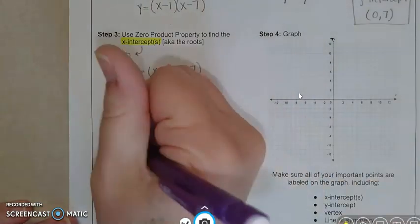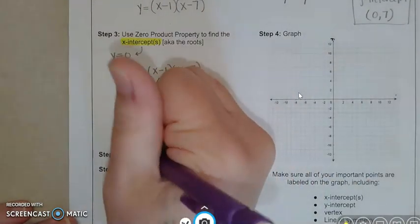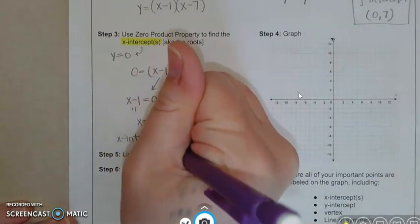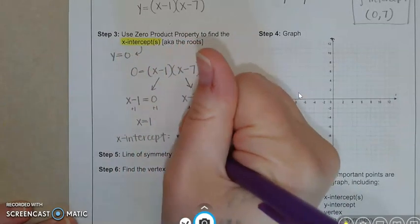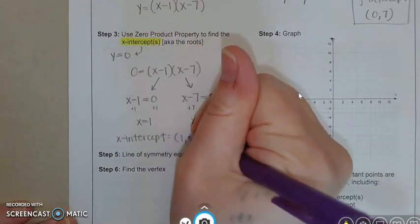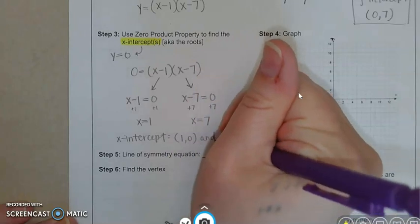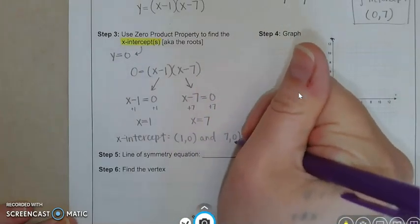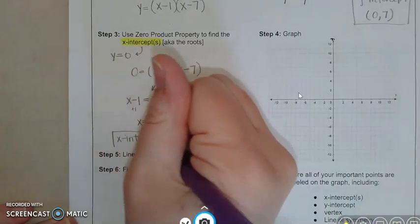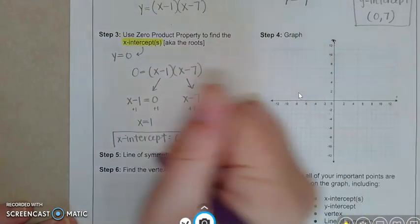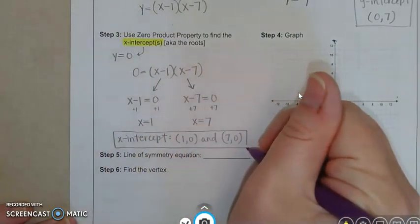So we got our x-intercepts. So let's write it out. The x-intercept is one, zero, and seven, zero.